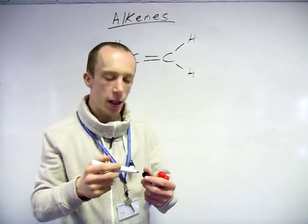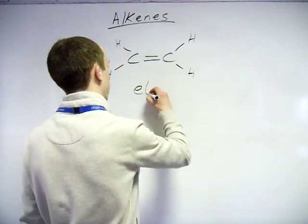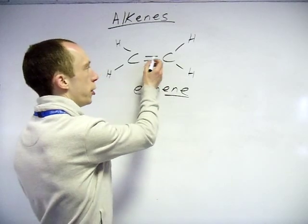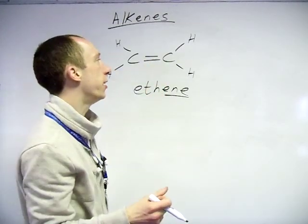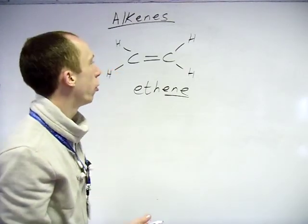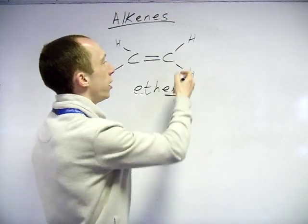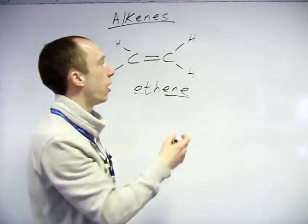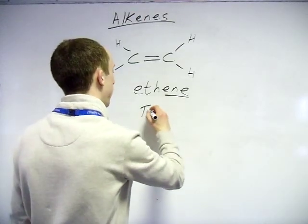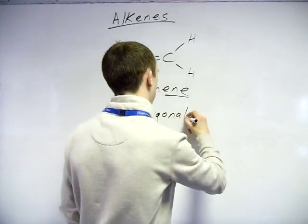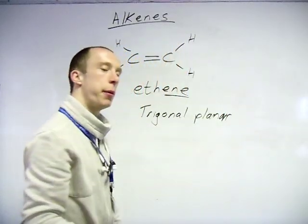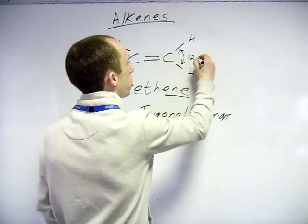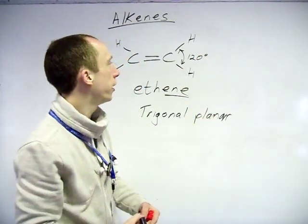The simplest alkene you will meet is ethene - two carbons with the 'ene' suffix representing the double bond, which is the functional group of the alkenes. In terms of shape, you should be aware from Chem 1 that there are three electron clouds around that carbon. The double bond counts as one cloud, so one, two, three - the shape will be trigonal planar, with a bond angle of 120 degrees.